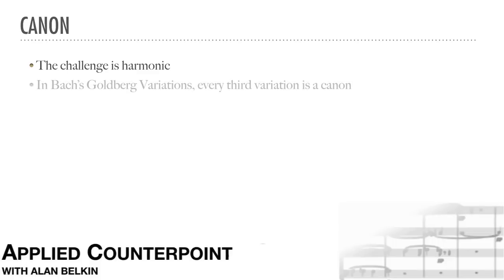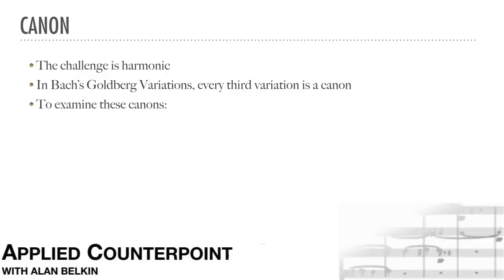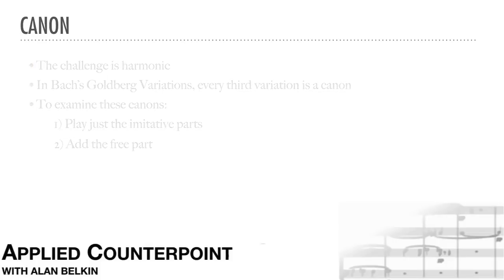For example, in the Goldberg Variations, every third variation is a canon, with one on each degree of the scale. All these canons have a free bass line. The student should examine these canons, first playing just the imitative parts, then adding the free part, to see how it clarifies and enriches the harmony.